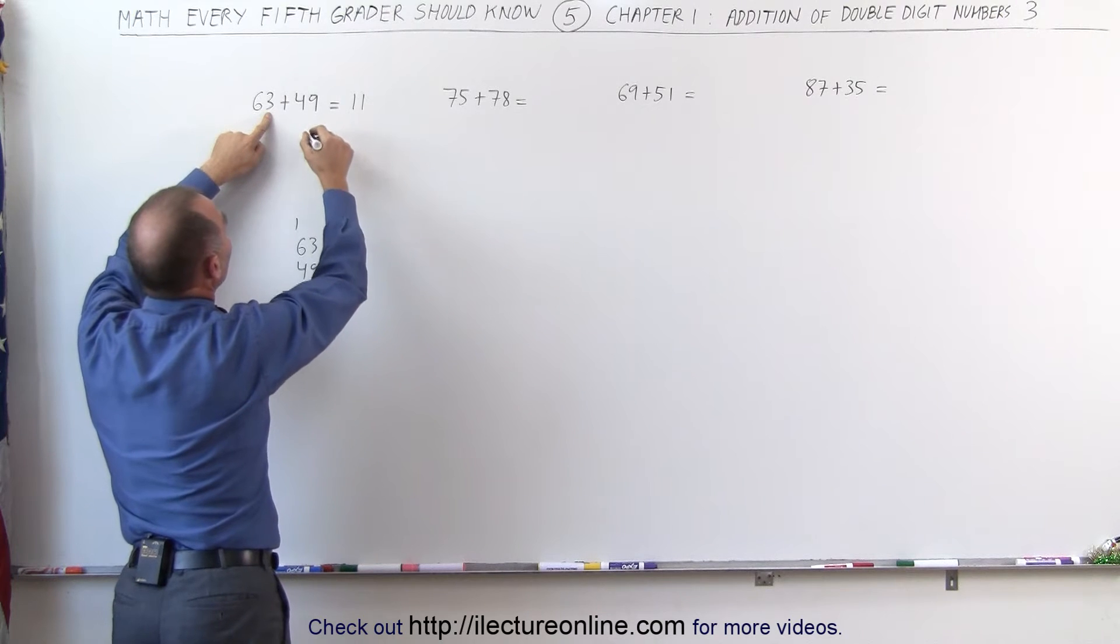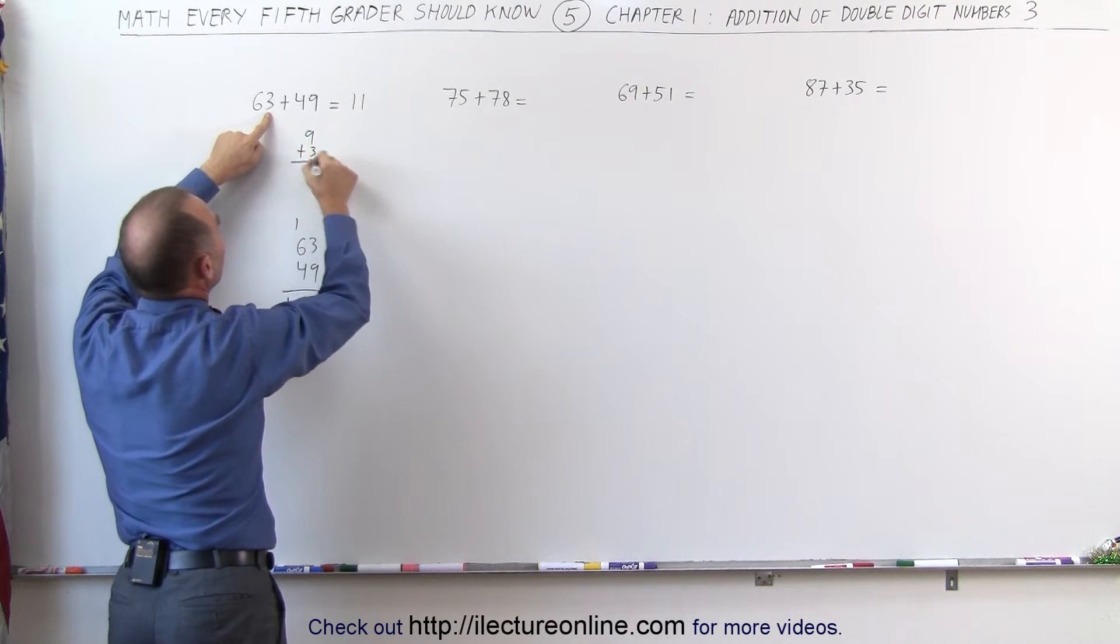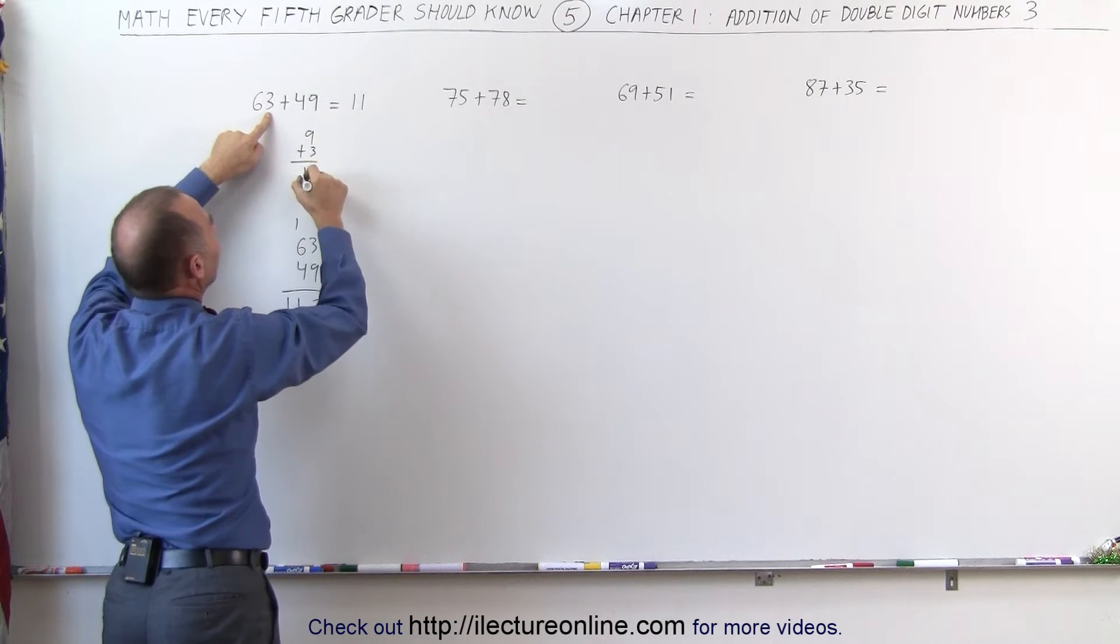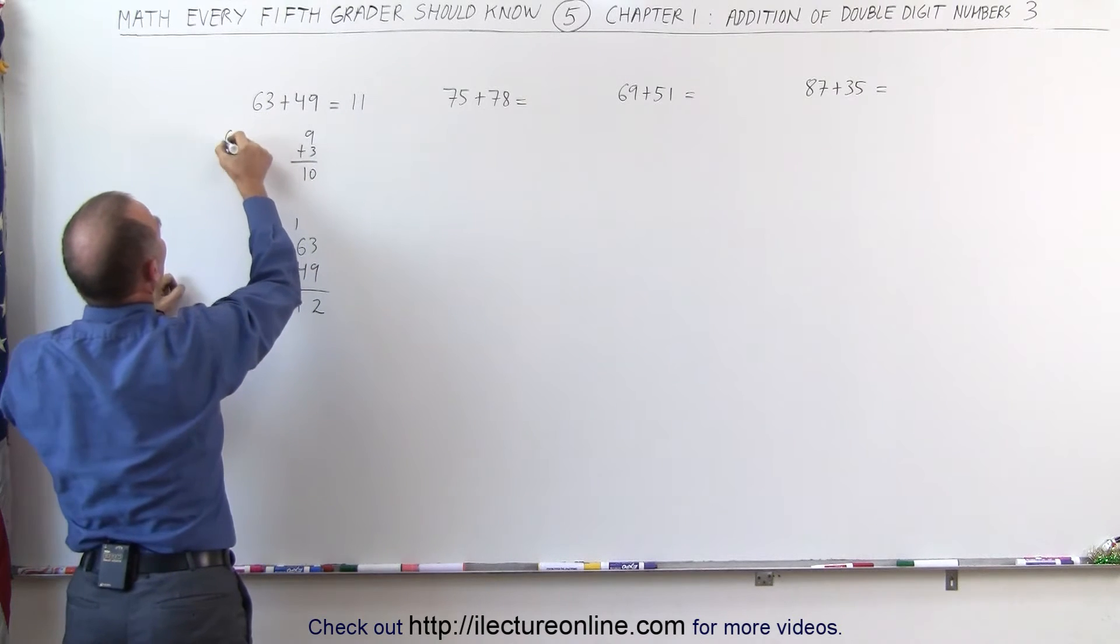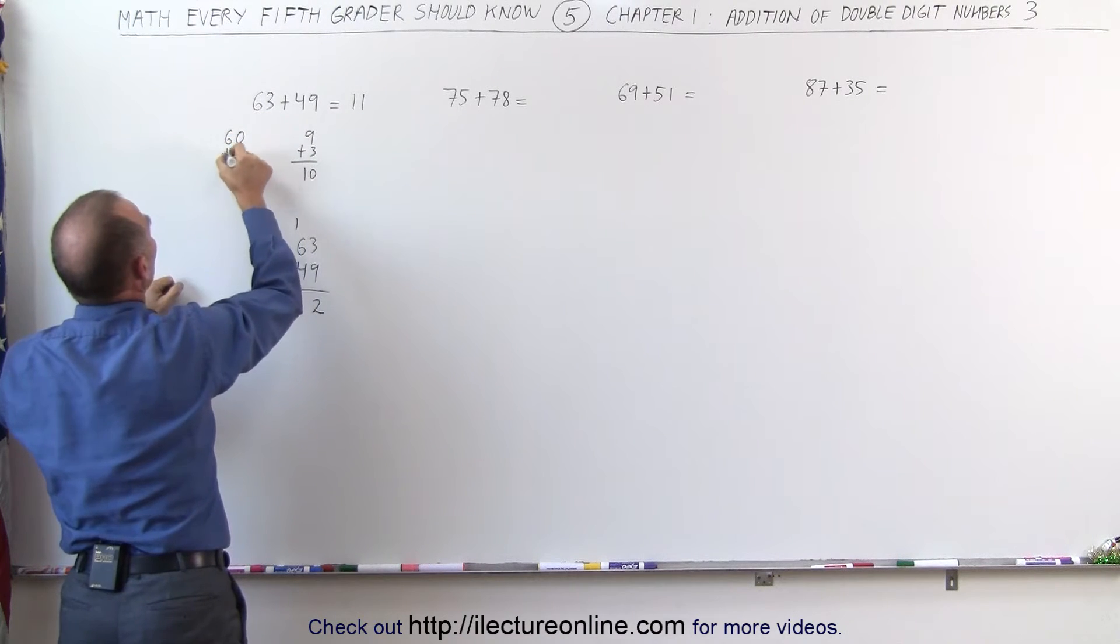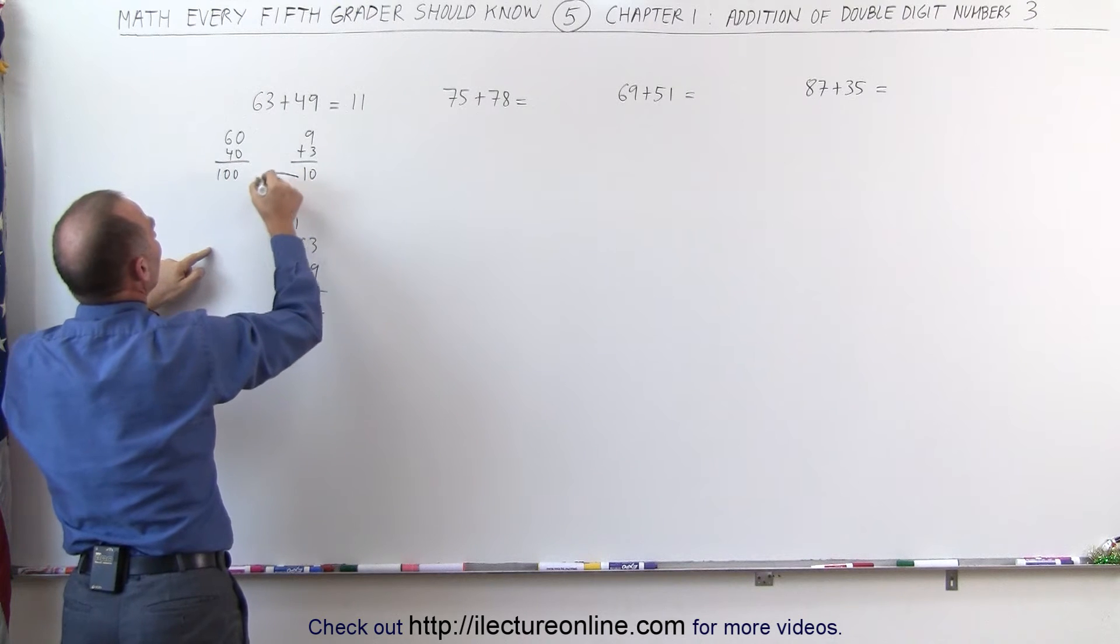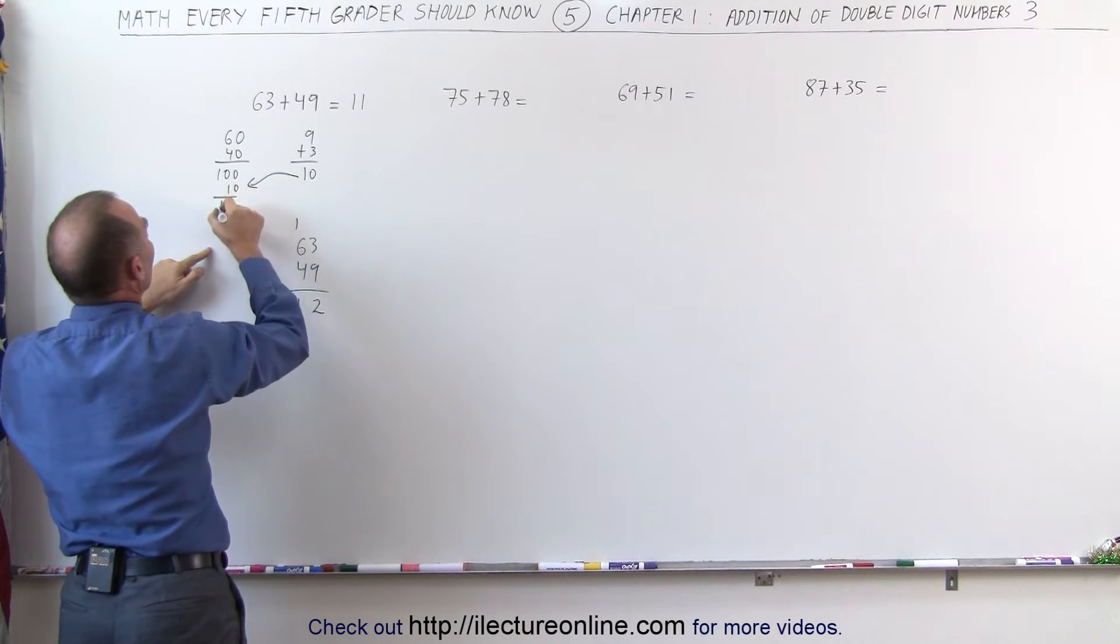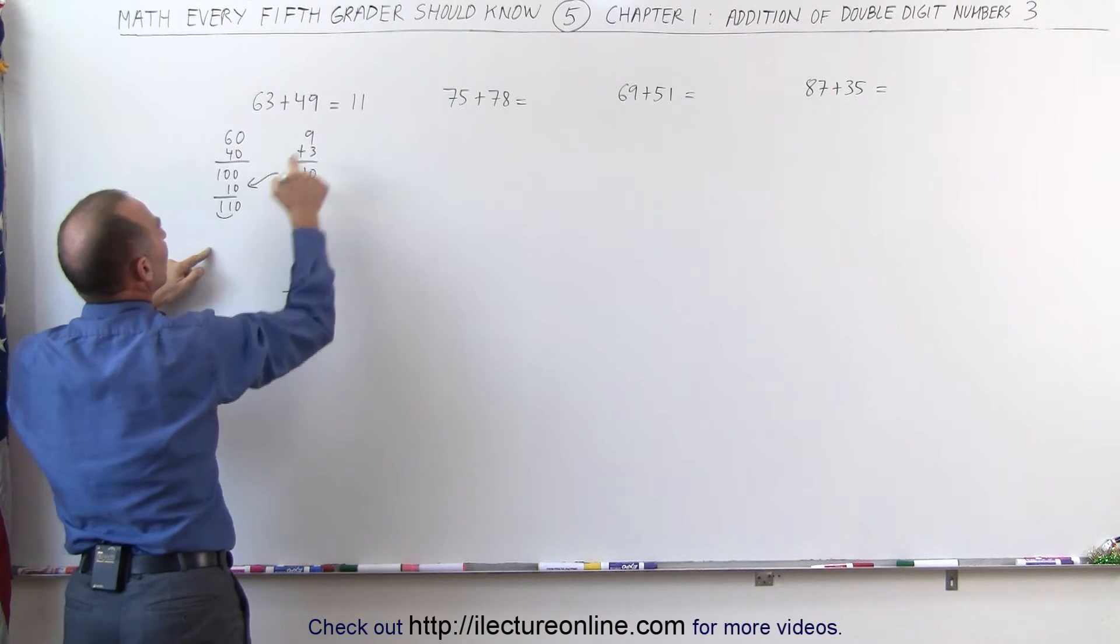And now I have to add those two numbers together. 9 plus 3. I need one more to make 10. Remember, that was added to the first two numbers. When I added 60 plus 40, I got 100. But I'm going to add this 10 to the 100 to make this into 110. So I'll add the first two numbers right here.